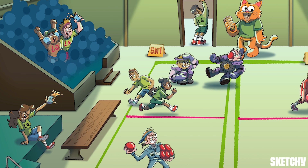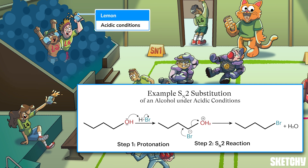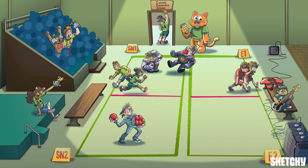These spectators sipping drinks are here to let you know that all the reactions we just covered can be completed with alcohol substrates, because the hydroxyl group on an alcohol can be a good leaving group. The trick is to do the reaction under acidic conditions, symbolized by the lemon wedges in these drinks and depicted by HBr, or hydrobromic acid, in the reaction diagram. The acidic conditions allow the alcohol group to be easily protonated before the reaction starts, converting the hydroxyl group into a positively charged, good leaving group, which allows any of these four reactions to move forward.